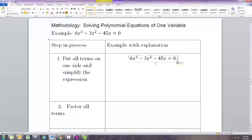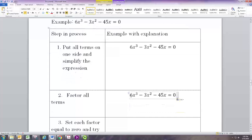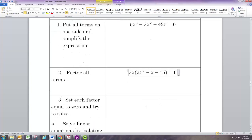The next step is to factor all the terms, and we did that earlier. We saw that these all have a common factor of 3x, and when we factor that out we have 2x² - x - 15.